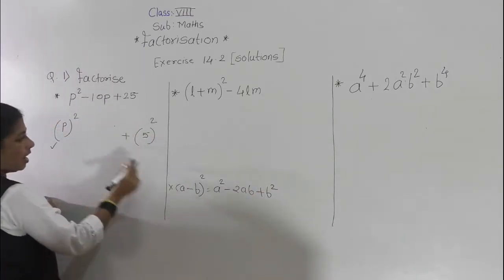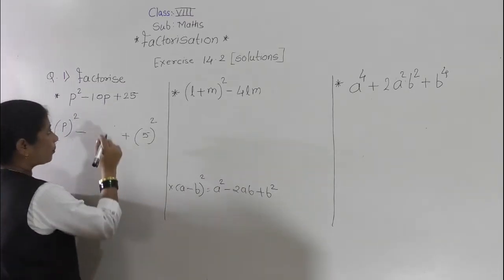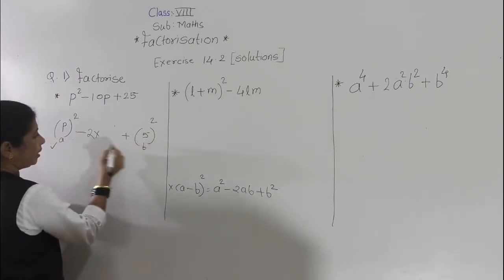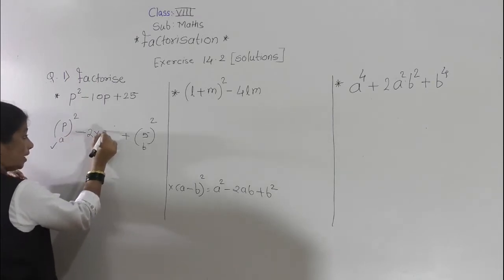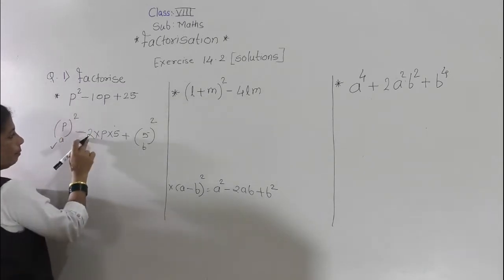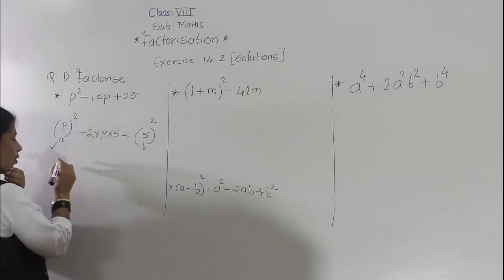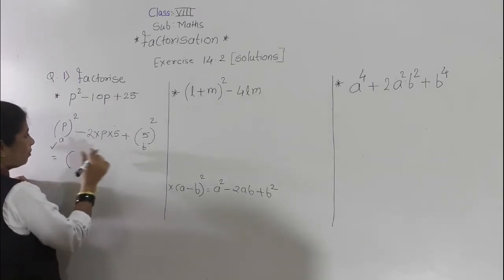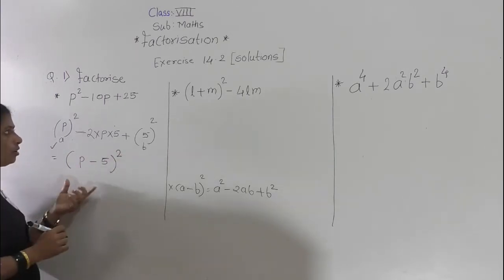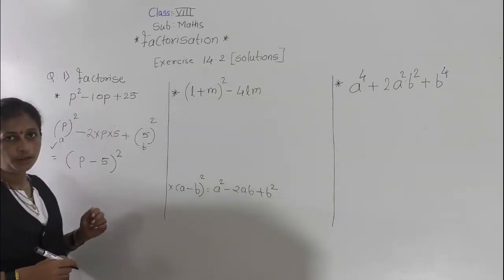The (a minus b) bracket squared identity is: a squared minus 2ab plus b squared. We got here a squared and b squared. Now, we check whether the middle term comes the same. Here 2 into a — a is p, and b is 5. So here p squared minus 2 times 5 is 10, so minus 10p plus 25. So the factor form is (p minus 5) squared. This is the actual factorization of p squared minus 10p plus 25.